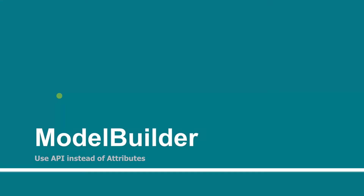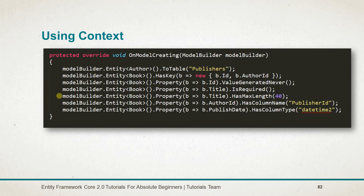In this session, we used the Fluent API provided by Entity Framework Core 2.0. We used the hasKey function, in which we specify a lambda expression for setting the index on two columns. To perform operations at the column level, we first retrieve the property and then call the function. We used valueGeneratedNever to disable the identity on the column, isRequired to make it not nullable, hasMaxLength to specify the maximum length for nvarchar, hasColumnName to specify a new name for the column, and hasColumnType to change the column data type.